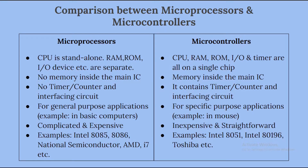Here is the comparison between microprocessors and microcontrollers. In microprocessors, the central processing unit is standalone — the RAM, ROM, and input/output devices are separate. But in microcontrollers, all components including the CPU, RAM, ROM, input/output devices, and timers are all on a single chip. This is the first difference between a microprocessor and a microcontroller.